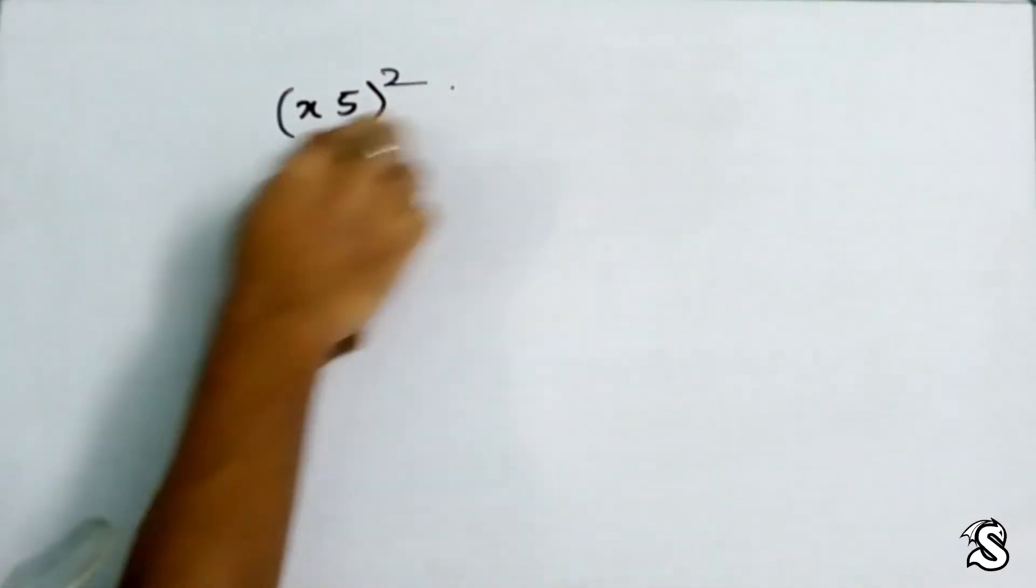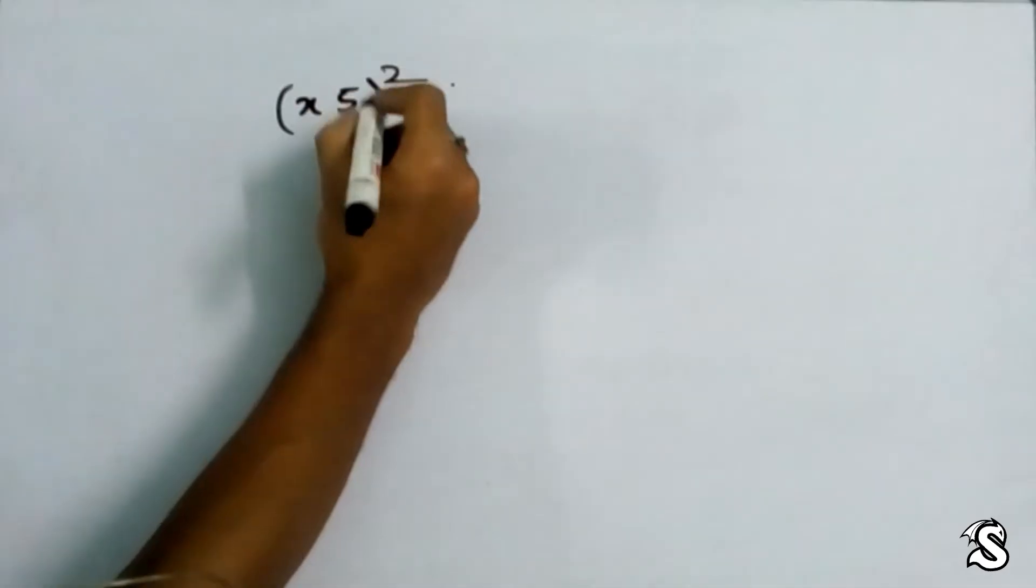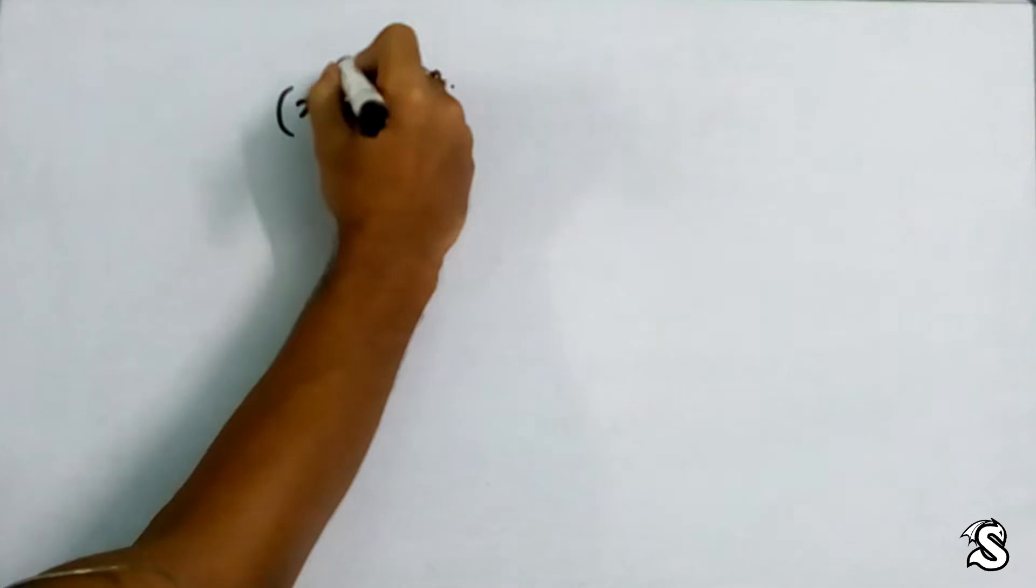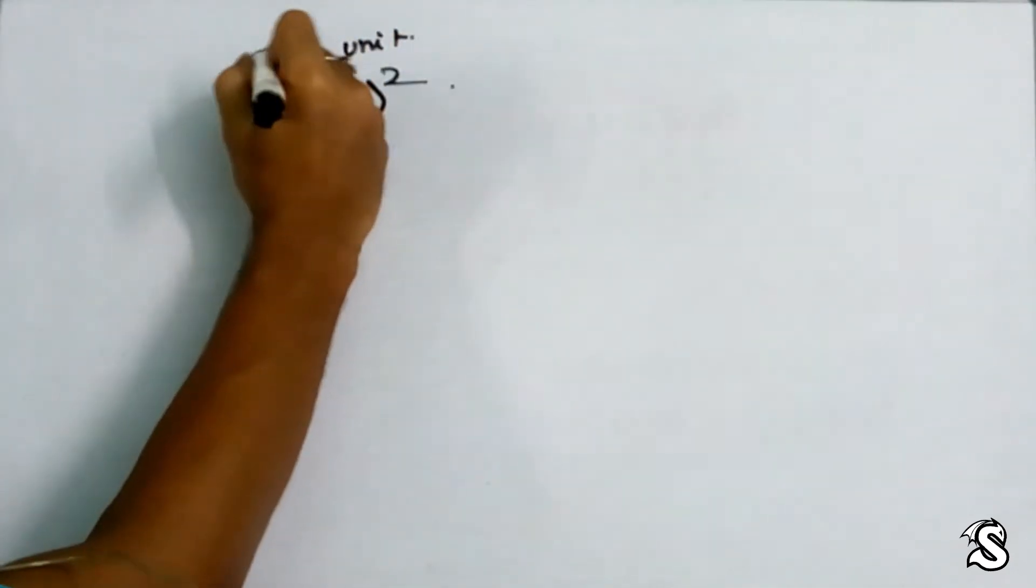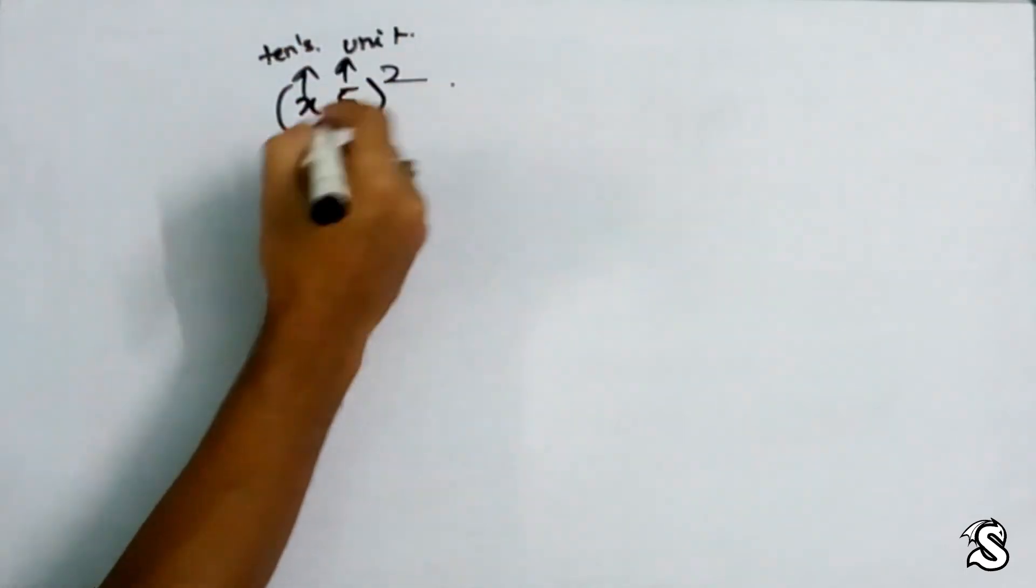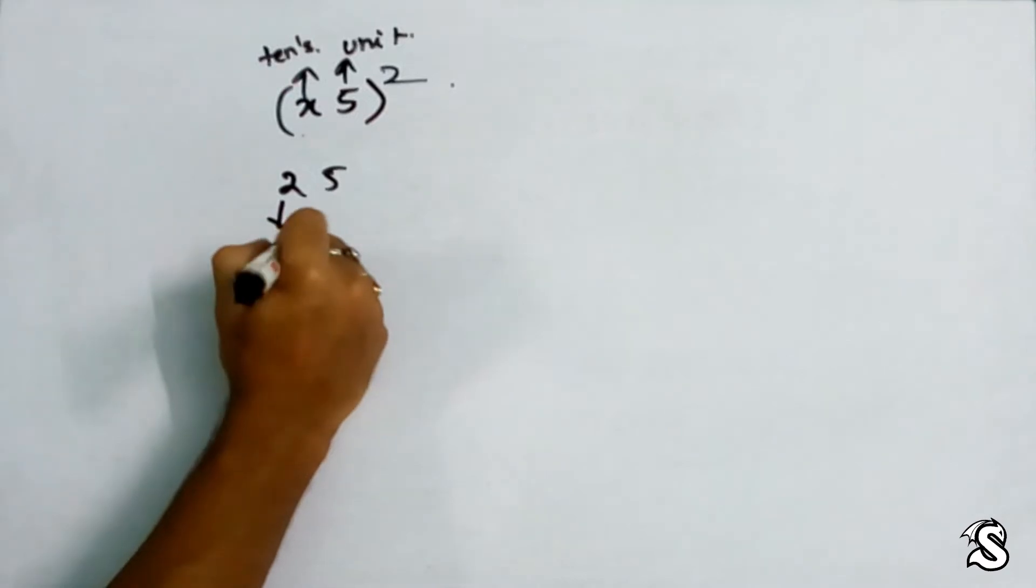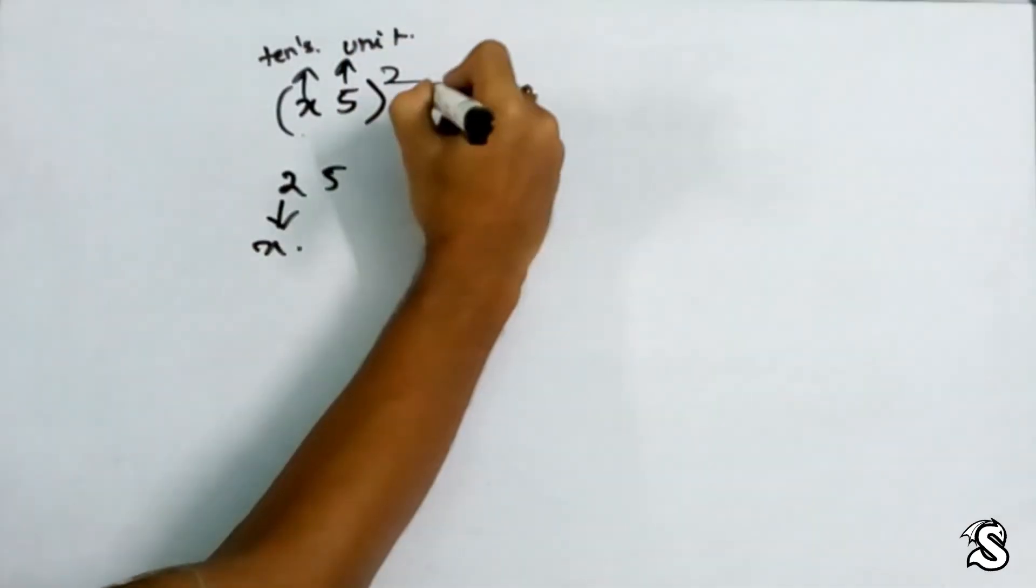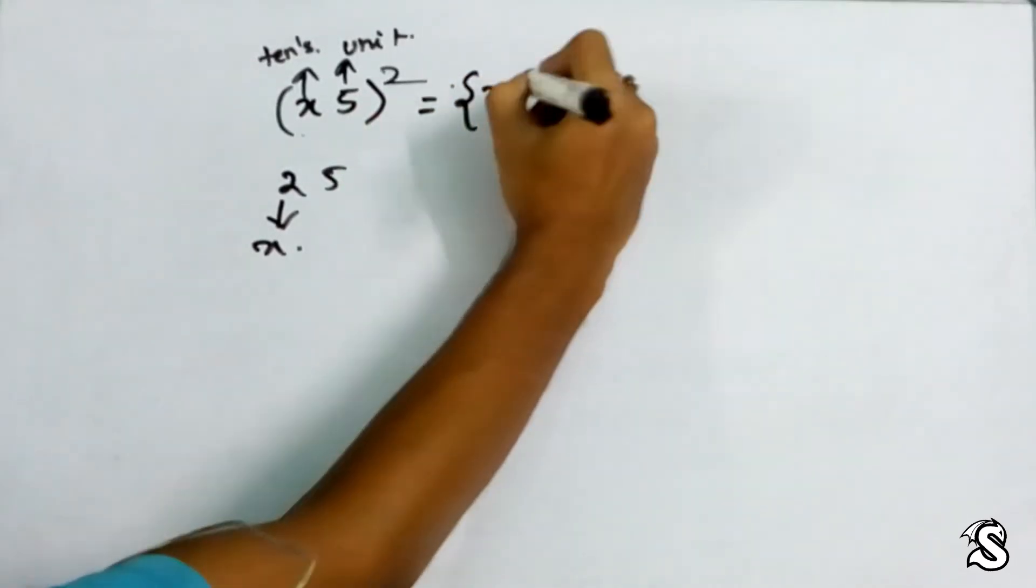There is a simple formula or technique which I am applying. Suppose this 5 is at the unit place, and there is anything at tens place or hundreds place. Like for example, in 25, here 2 is the value of x.